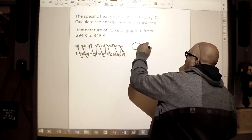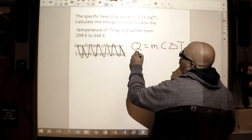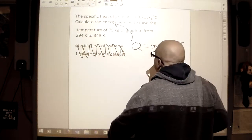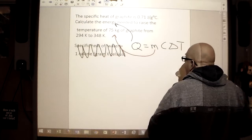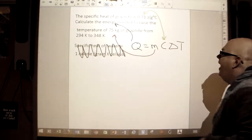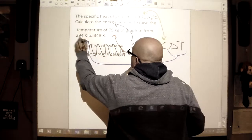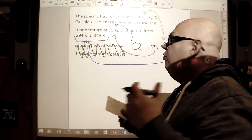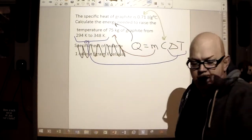But we are dealing with our formula where Q equals mcΔT, where Q is our energy. That's the energy we need. Our mass is the 75 kilograms of graphite. They gave us the specific heat right here, and then our delta T. This is connected to this, so we have all the pieces of information. We have the formula. Now it's a question of we need to do a little bit of work to calculate things.